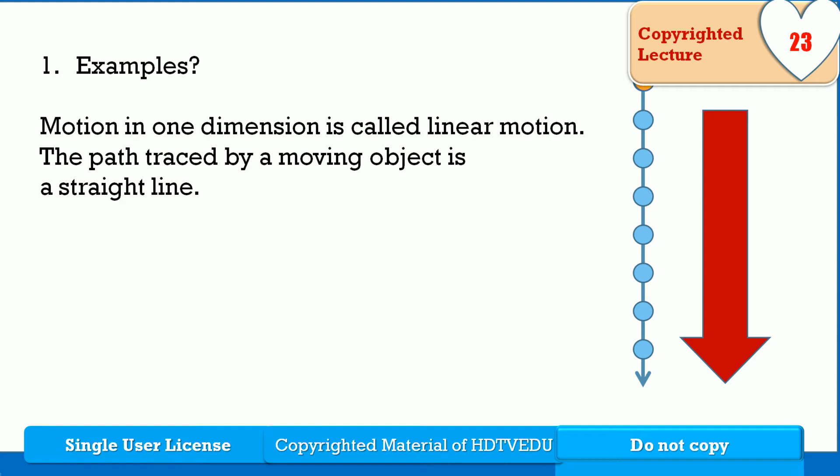Whenever you drop a piece of paper, let's assume that it is coming down at constant speed. You cover equal distances in equivalent intervals of time. That is linear motion.